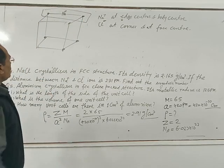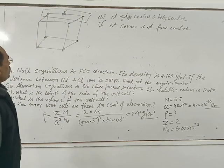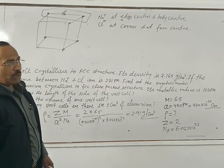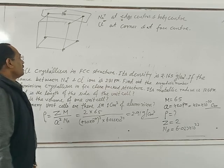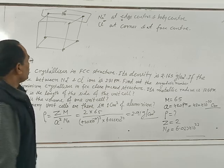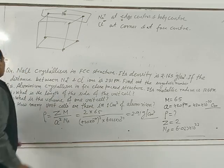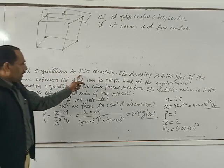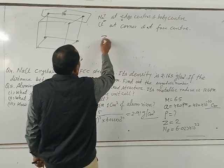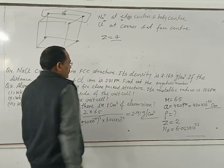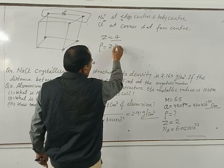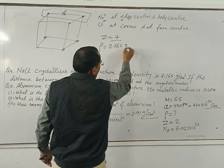Throughout the unit cell of the NaCl lattice, all sodium ions are at the edge centers as well as the body center, and chloride ions are at the corners as well as the face centers. In this question, NaCl has an FCC-type structure, so Z equals 4. Its density rho is given as 2.165 grams per centimeter cubed.